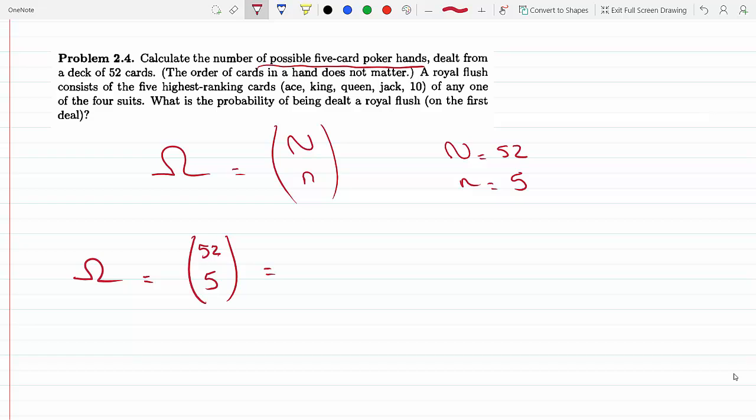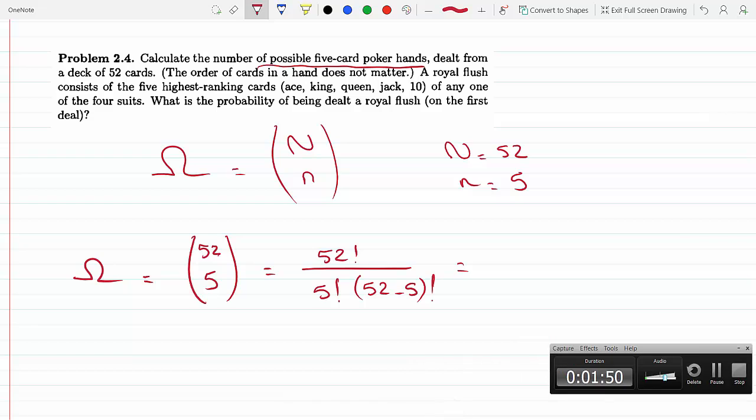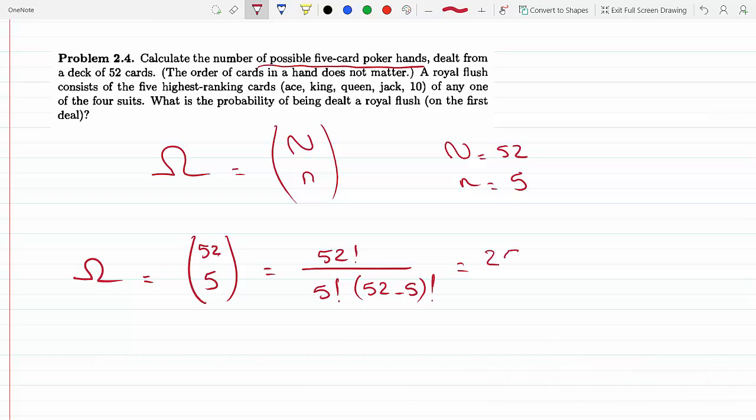As you know, the formula says this is just N factorial over n factorial times (N minus n) factorial, which is 52 factorial divided by 5 factorial times (52 minus 5) factorial. Plugging this in, we will get 2,598,960. So this is how many ways we could choose five cards out of 52.